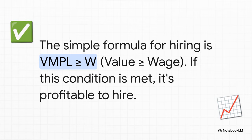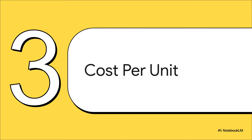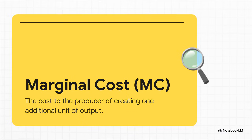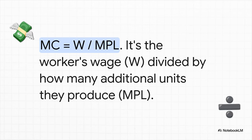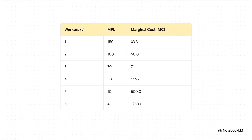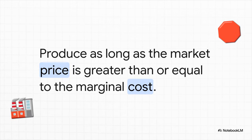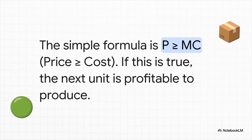There's actually another way to look at this exact same problem. Instead of looking at the value each worker brings in, let's flip it around and look at the cost of producing each individual book. This is called marginal cost, or MC, and it tells us exactly how much it costs the business to produce just one more book. The formula: you take the wage, W, and divide it by the marginal product of labor, MPL. What's interesting is that as the marginal product goes down — each worker adding fewer books — the marginal cost to produce each book goes up. This leads us to our second golden rule: it's only worth making another book if you can sell it for more than it costs to make. So price must be greater than or equal to marginal cost, P ≥ MC. That's the production side of the profit maximization puzzle.